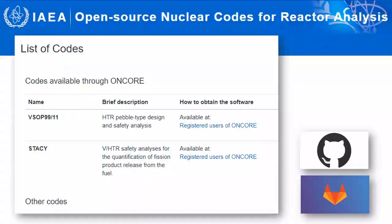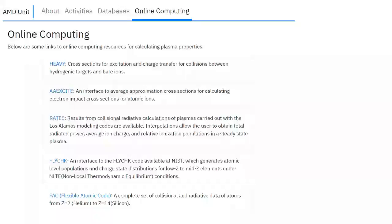Regarding the open code context in the IAEA, we should mention the OnCore initiative. If there is an idea of making this platform collaborative, then it should be necessary to provide access to GitHub or GitLab platforms. These are needed to develop or host open code projects with or without controlled access. At the AMD unit, we find five online computing resources. Let me point out that online computing is not the same as open code.